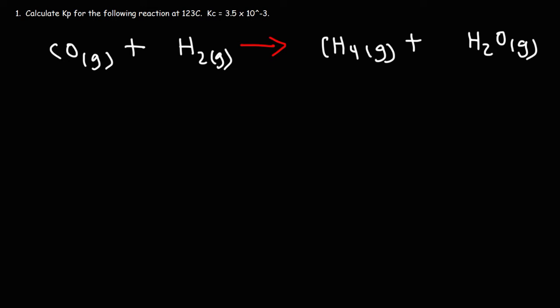In this video, we're going to talk about how to calculate Kp from Kc. We're given a reaction where gaseous carbon monoxide reacts with hydrogen gas to produce methane, which is natural gas, and gaseous water, or steam. We're given the temperature of the reaction, 123 degrees Celsius. How can we calculate Kp, the equilibrium partial pressure, given Kc, the equilibrium concentration constant?